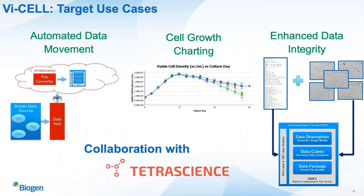We had three target use cases for our Vi-CELL instruments. The first was to create an automated data movement pipeline — as soon as a sample is completed, the experimental data is fed to a data hub, into the cloud environment for file conversion and generation of an ADF. The second use case is to recreate the existing analysis our SMEs are producing — cell growth charting, which measures cell density over a 14-day period. Finally, we want to enhance our data integrity by using the ADF file structure to house the numerical text file and 50 image files together, so that when we search for raw data we can also find the associated images.